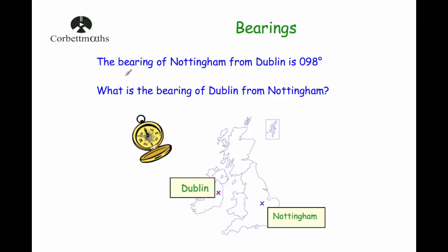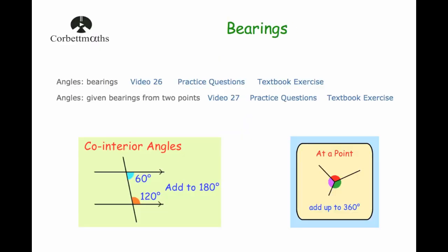Here's a typical question. The bearing of Nottingham from Dublin is 098 degrees. What is the bearing of Dublin from Nottingham? Just before we do that, it's important to know a couple of things. Bearings are the direction you're travelling, measured clockwise from north.